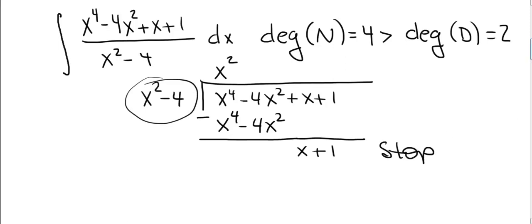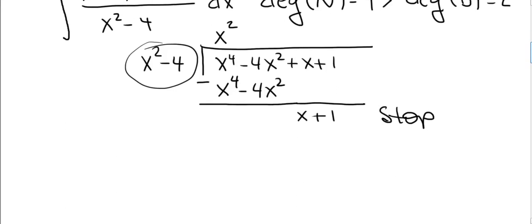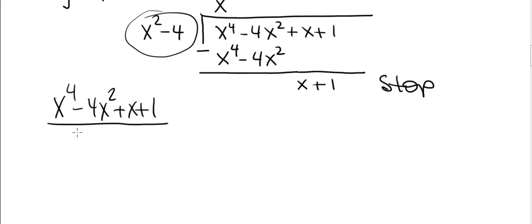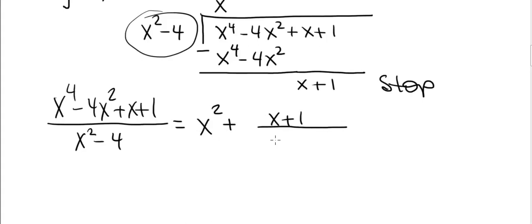What does that mean? It means x to the fourth minus 4x squared plus x plus 1, divided by x squared minus 4, equals x squared plus x plus 1 divided by x squared minus 4.